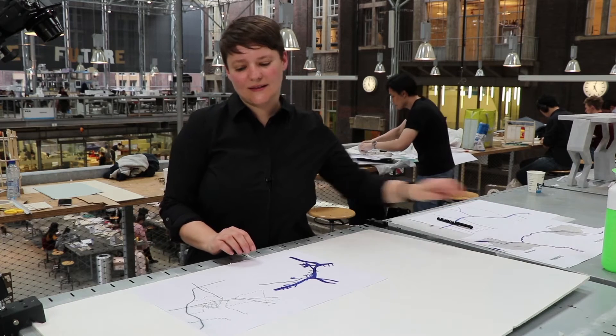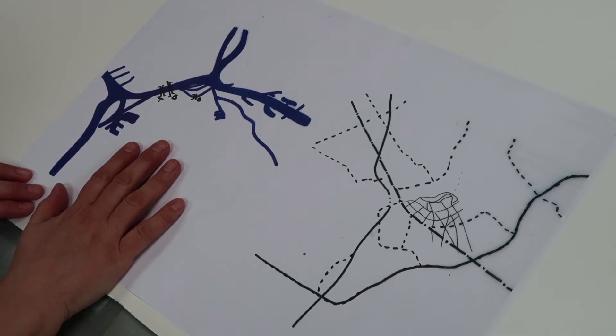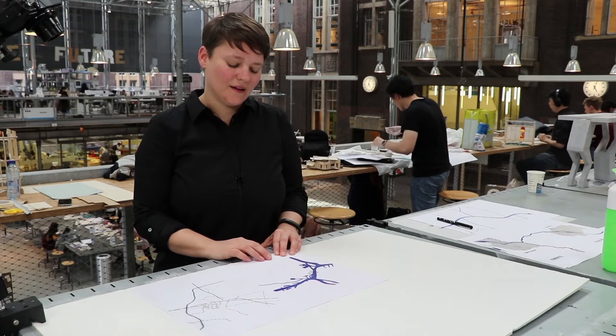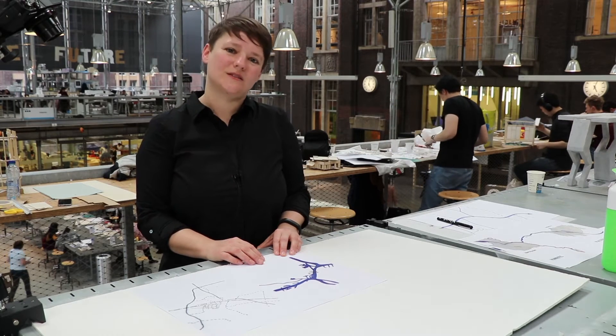Looking now at an example where we zoom in a bit, we can see on the left hand the river system, a water system, and on the right hand the transport system of the same city. A system usually is composed of parts, and these parts are interlinked.